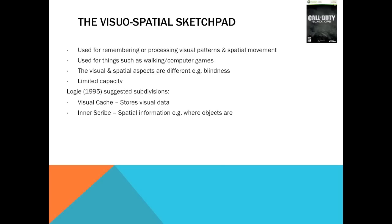There is a limited capacity here — you can only visualise and attend to a certain amount. Much like the phonological loop, Logie suggested the visuospatial sketchpad is separated into two subdivisions. The visual cache is where we store visual information — equivalent to the phonological store. The inner scribe deals with spatial information — where objects are. For example, walking around a chair in a room uses the inner scribe to map the space. In sport, making a pass in rugby or football requires the inner scribe to create a vision of where teammates are.